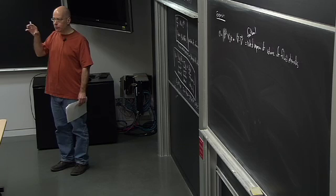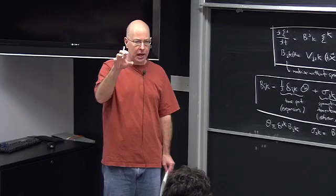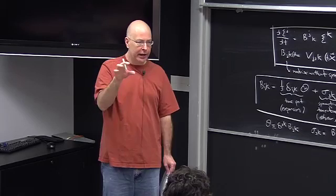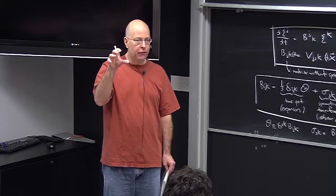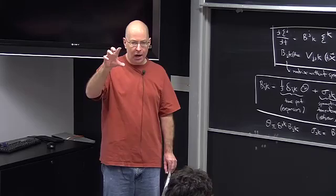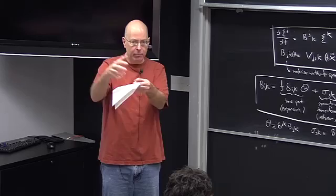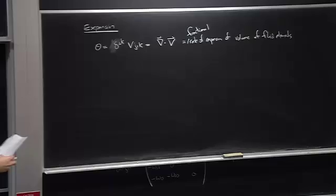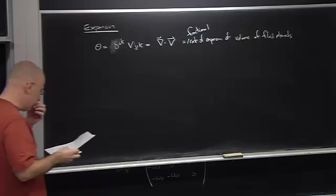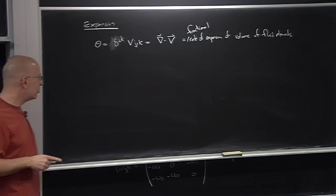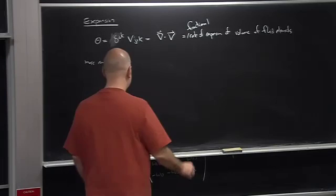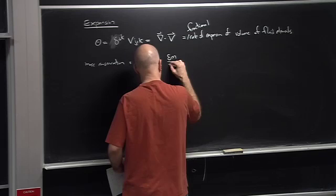Now let's talk about the shear. I'll pretend that θ = 0 and ω_{jk} = 0, so the only thing acting is the shear tensor σ_{jk}, which is a symmetric tracefree tensor. To simplify, I'll take σ_{12} = σ as the only non-vanishing component. The equations become: dξ_x/dt = σ ξ_y, and dξ_y/dt = σ ξ_x.